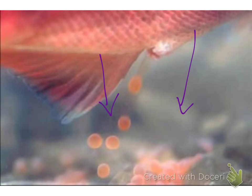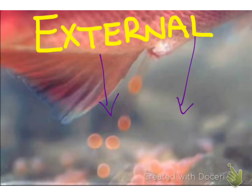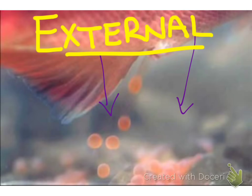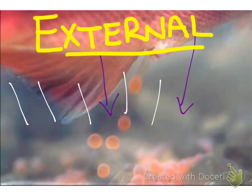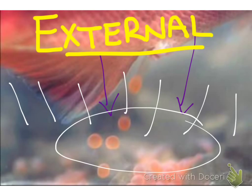This kind of fertilization is called external fertilization. With external fertilization, the eggs are outside of the female's body, and the male salmon comes along and deposits sperm onto those eggs. So the fertilization actually happens outside of the female's body — therefore it is external fertilization.